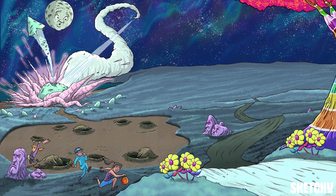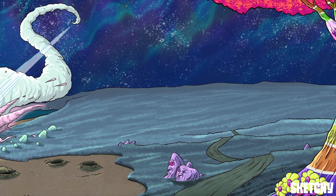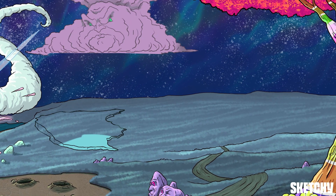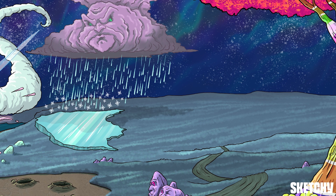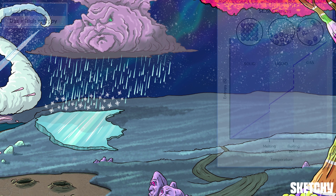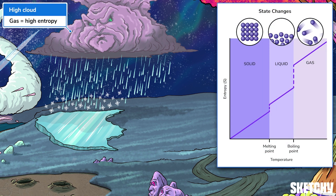Entropy change in a system or reaction is a little different than entropy in the entire universe — it can increase if energy is taken in by the system, or decrease if energy is released into the surroundings. Changing states of matter, like going from solid to liquid to gas, changes entropy. Gases, like this cloud high in the air, always have the highest entropy — molecules move around fast and they're pretty spread out, which means high entropy.